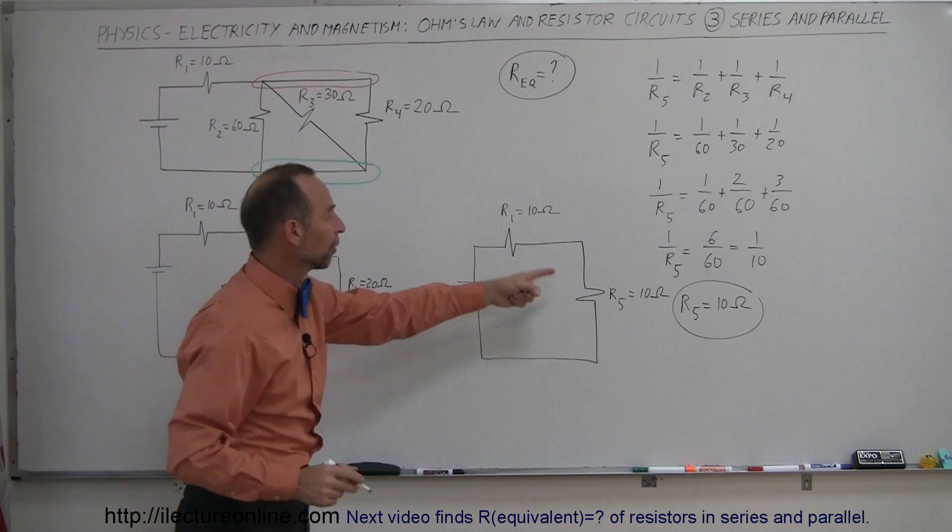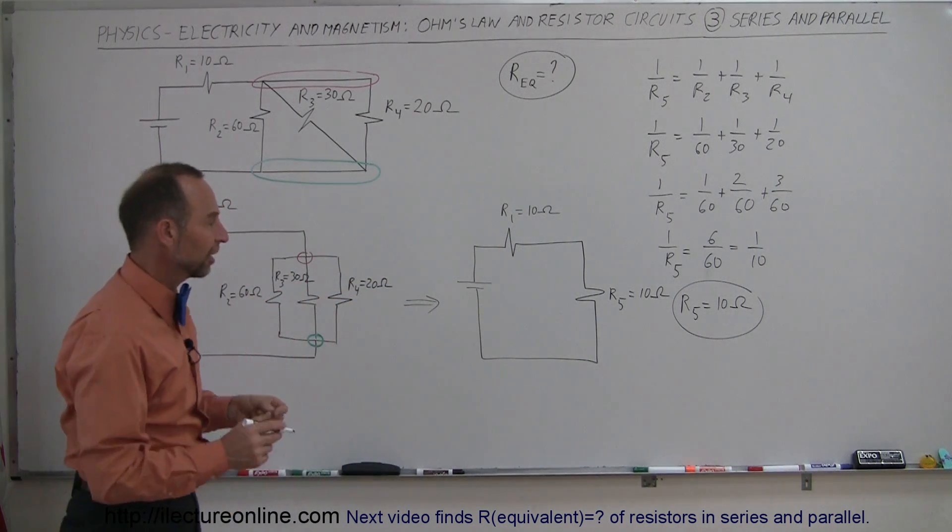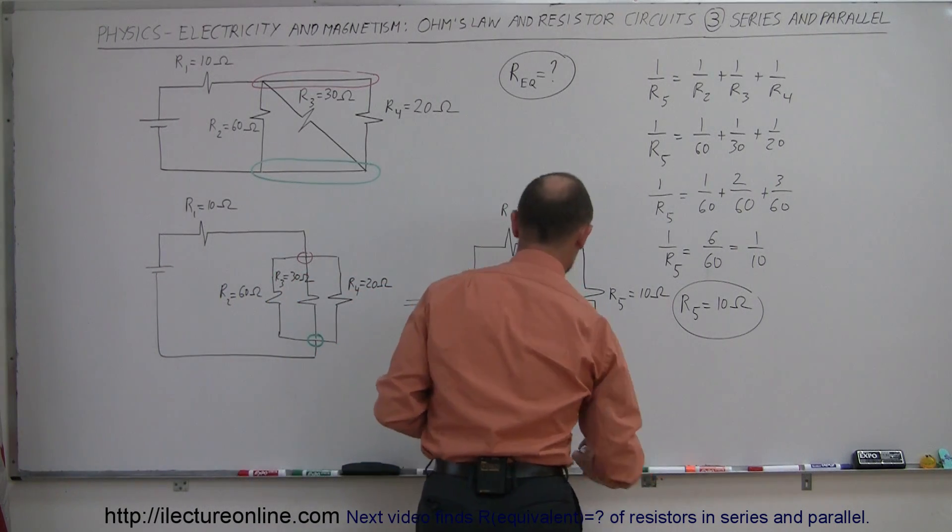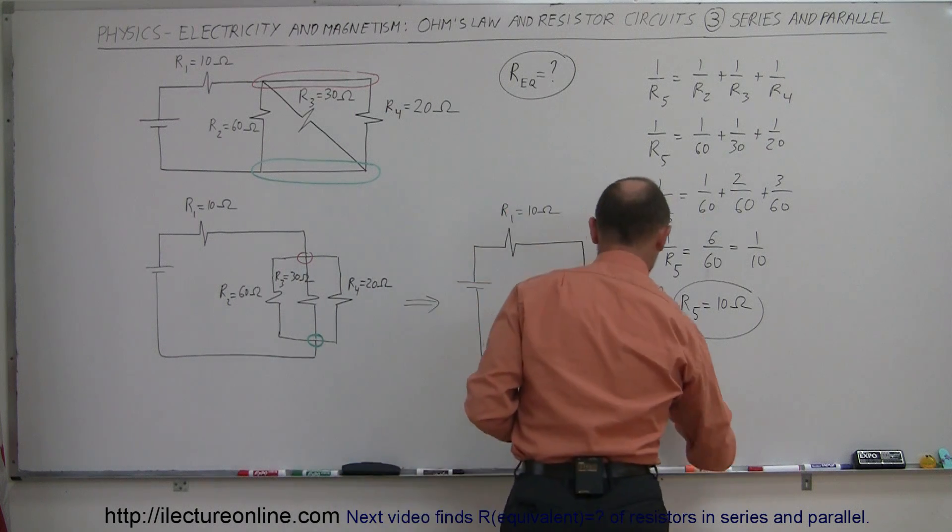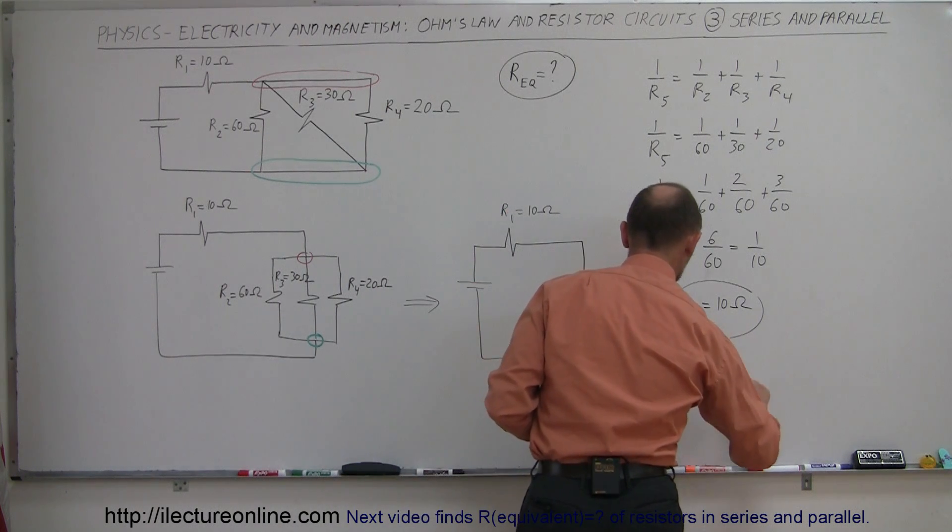Now finally, we can combine those two together, form a single resistor for that circuit. So right here, we have one battery and a single resistor. So we call this R6.